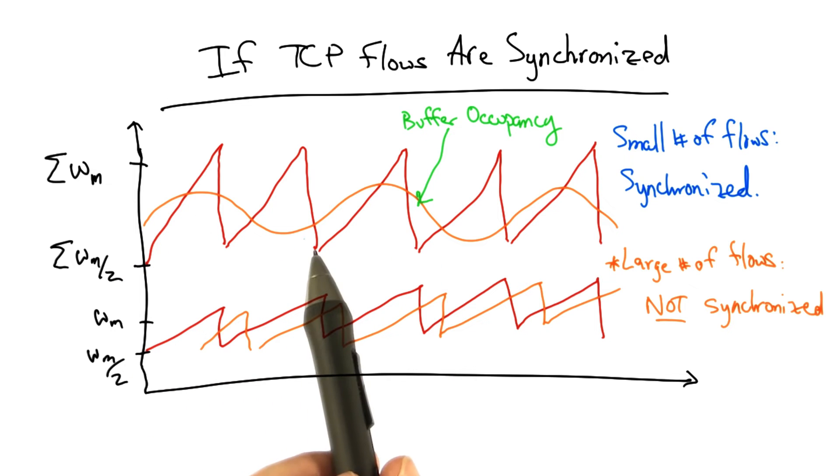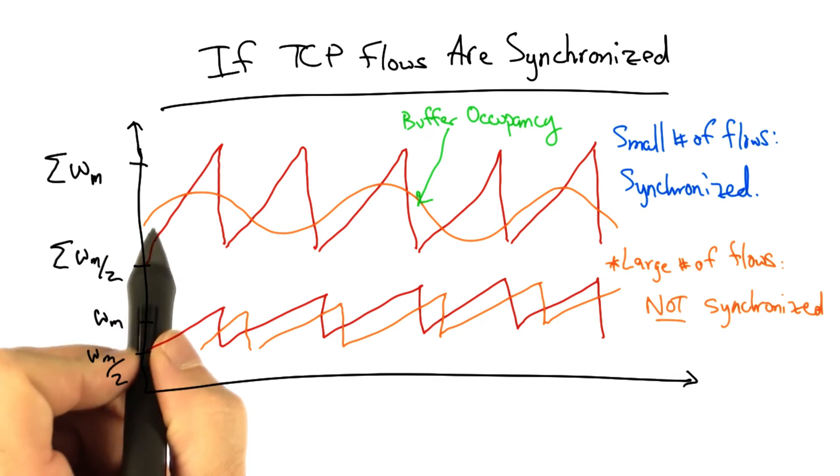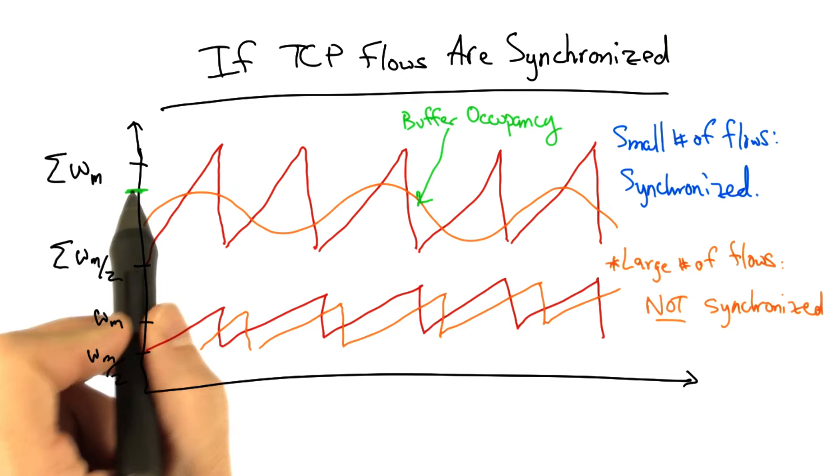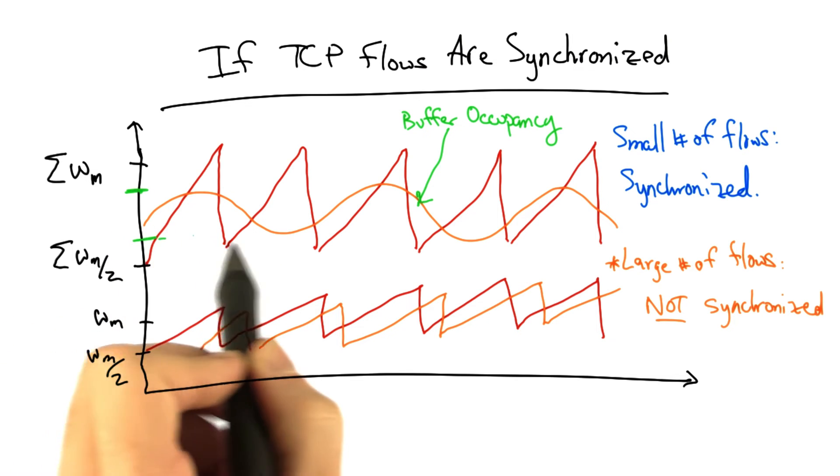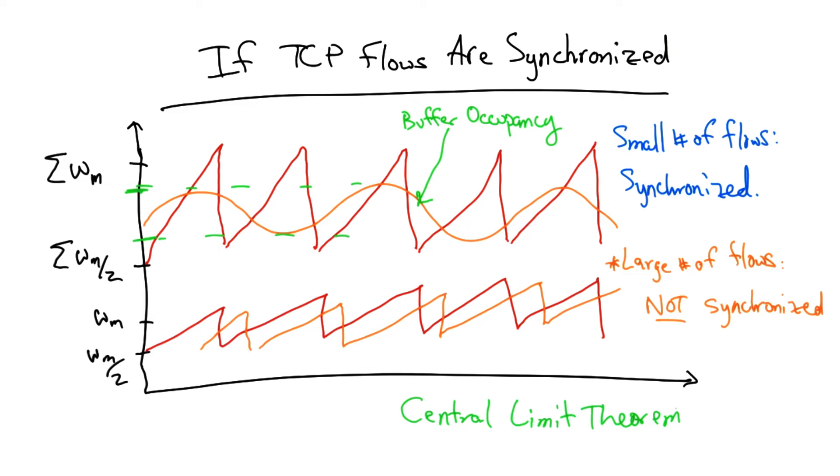Now, we can represent this sum, which is the buffer occupancy, as a random variable. At any given time, it's going to take a particular range of values. The range of values that this buffer occupancy takes can actually be analyzed in terms of the central limit theorem.